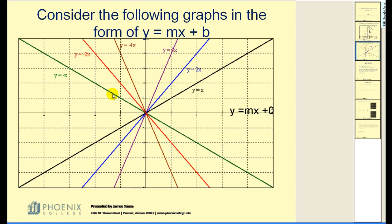Now looking at the brown, red, and green line, the green line is y equals negative x, or you can think of it as negative 1x. The red line is y equals negative 2x.